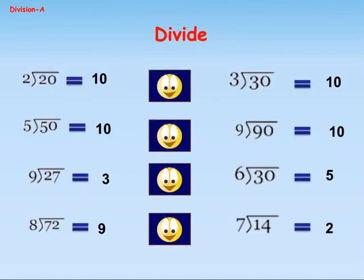Divide. 20 divided by 2 equals 10. 30 divided by 3 equals 10. 50 divided by 5 equals 10. 90 divided by 9 equals 10.